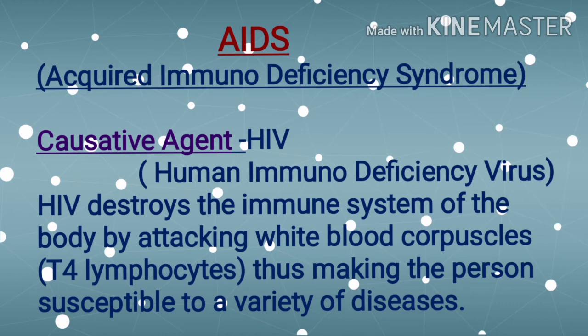AIDS is caused by a virus called HIV, which stands for Human Immunodeficiency Virus. HIV is a type of virus which infects human immune cells and destroys the immune system of the body. It attacks white blood corpuscles — T4 lymphocytes — and makes the person susceptible to a variety of diseases.